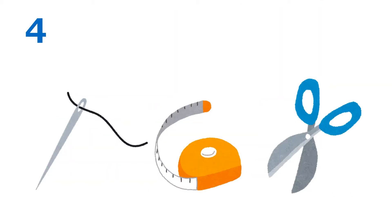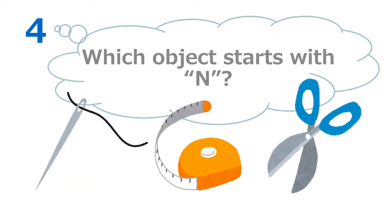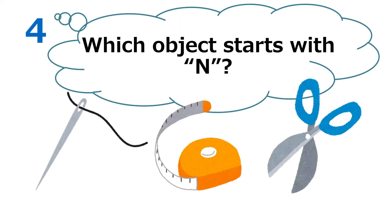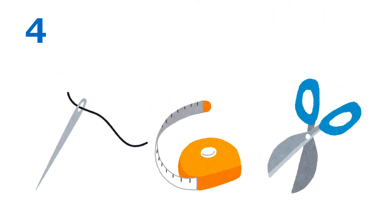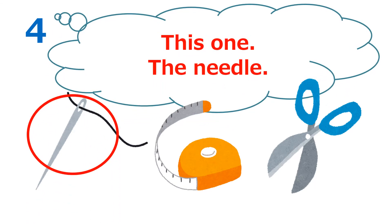Question 4. Which object starts with N? Answer. Yes, this one. The needle. The answer is the needle.